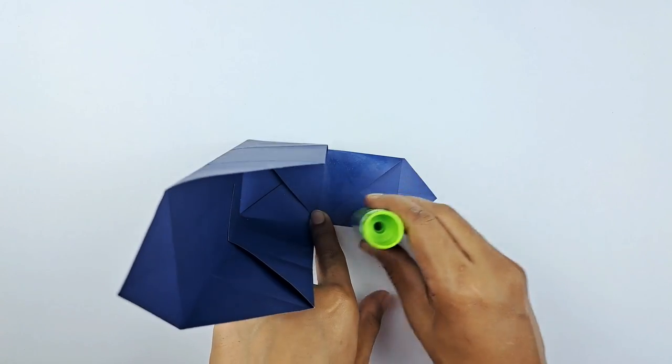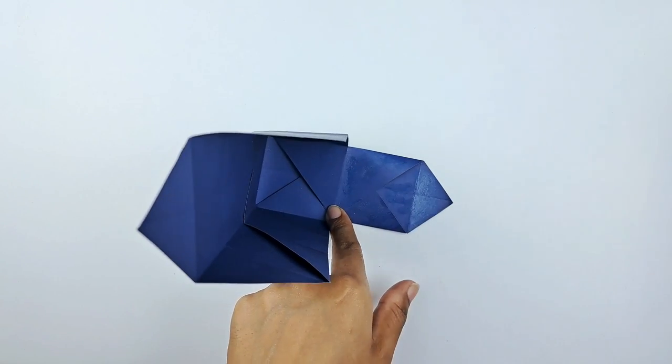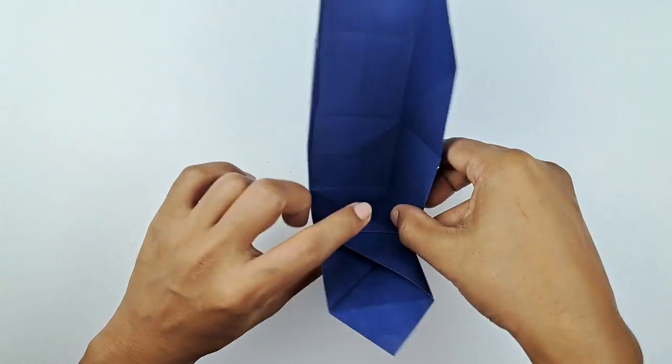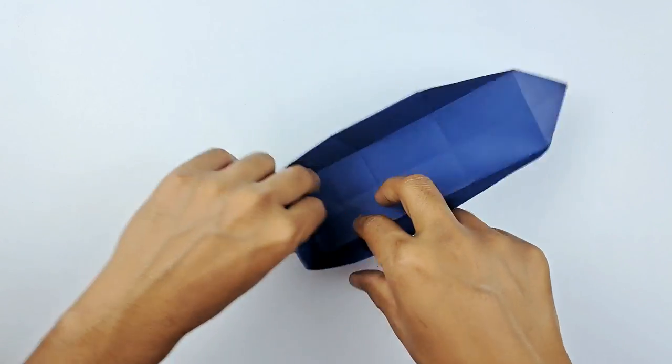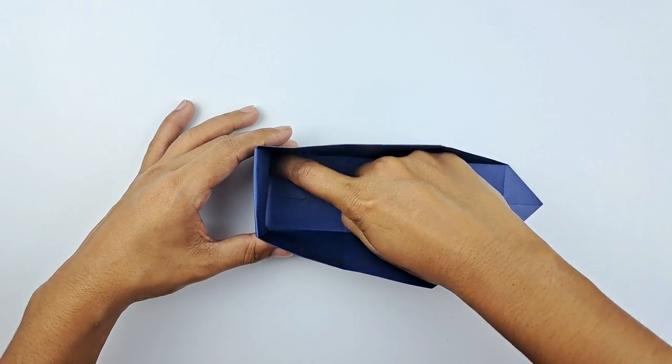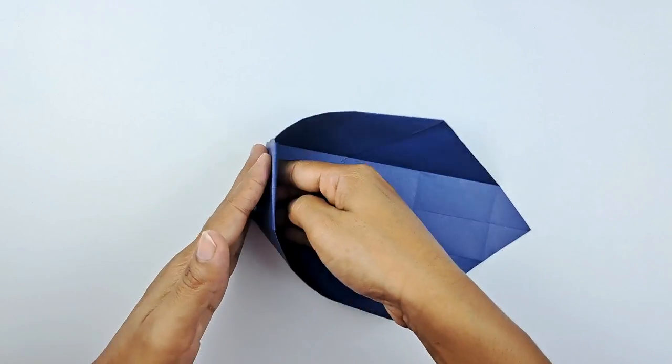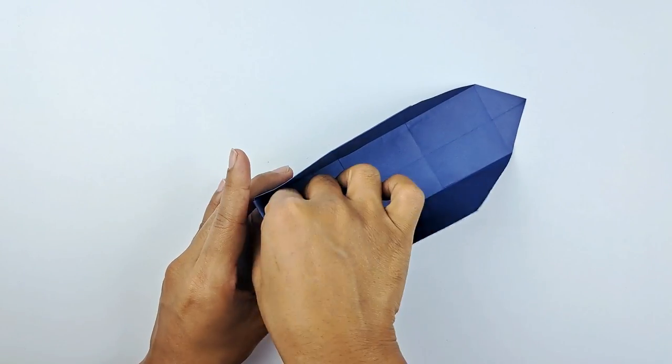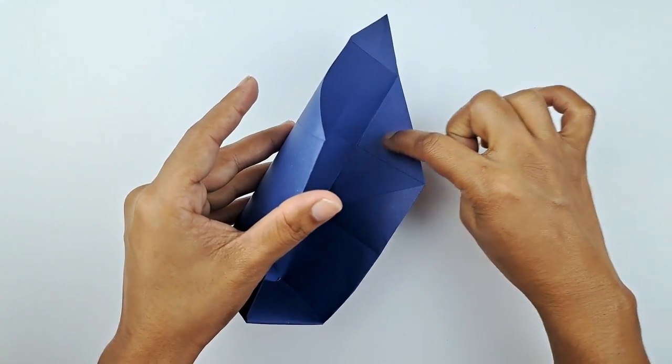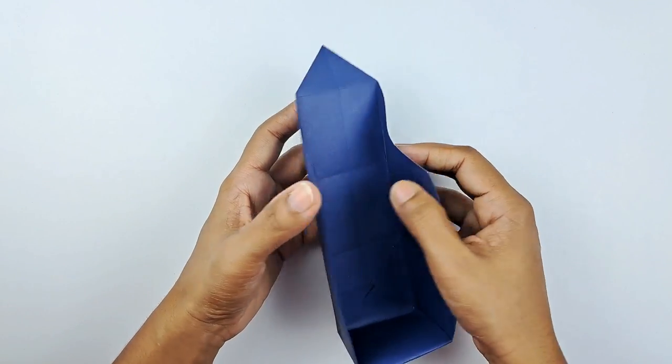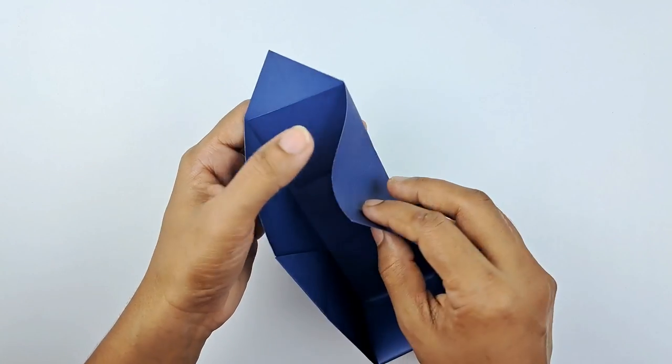Now we're going to take a little bit of glue, and fold that inward, like so. Stick it down, like that. And then we're going to use those creases again at the top there, to fold inwards.